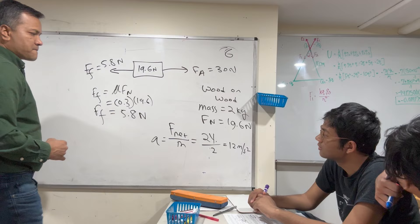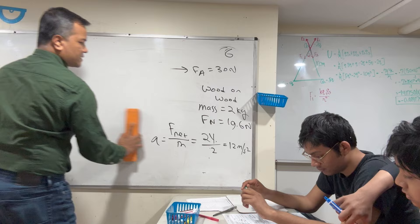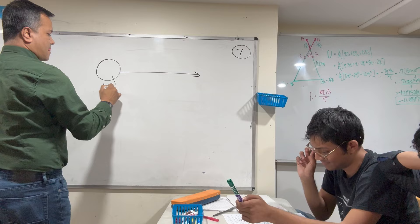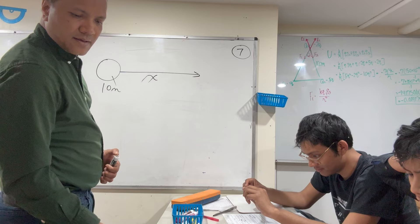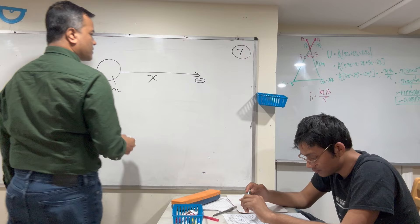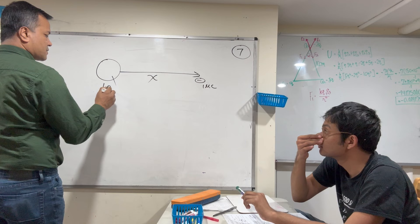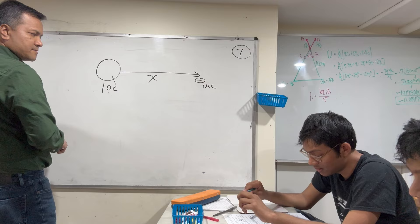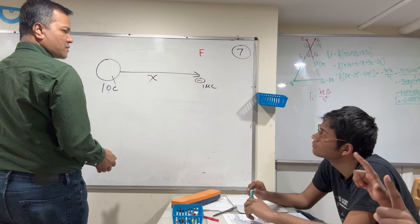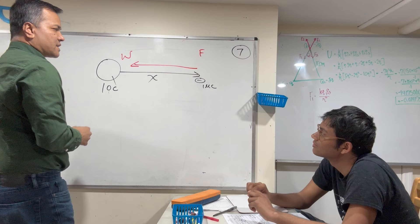Problem number seven: An electric field of 900 Newtons per Coulomb is exerted by a source charge of 10 Coulombs, x meters away from a test charge of minus one microcoulomb. What is the direction of the force? The electric field is positive; q of the test charge is negative, so the force is to the west — 180 degrees.